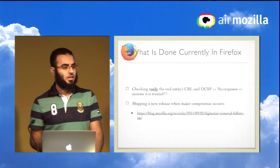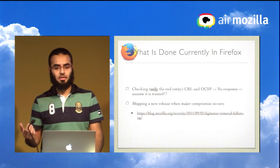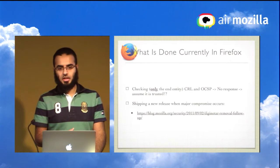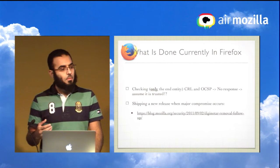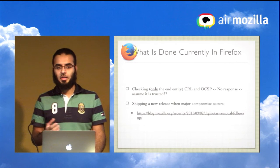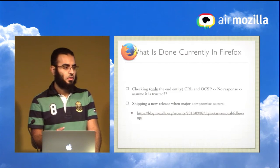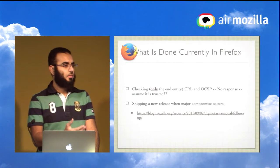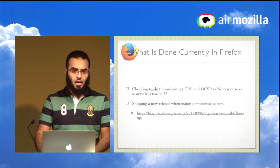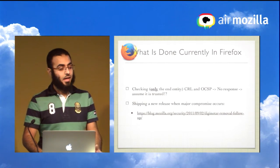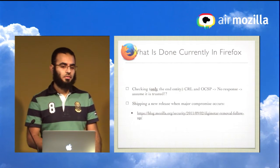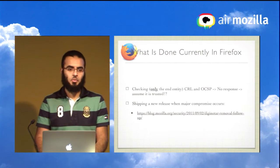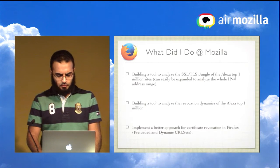This is particularly alarming because we're increasingly seeing cases where compromise happens in the middle of the chain, such as in the DigiNotar case. An adversary positioned between the browser and the CA server could simply block all revocation responses, and the browser would assume the certificate is valid. When something like DigiNotar happens, we have to change Firefox's logic and ship a new release.